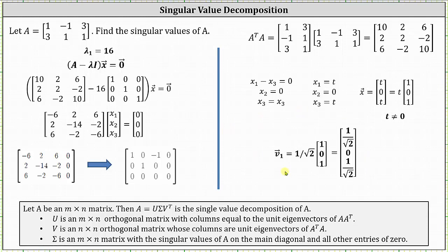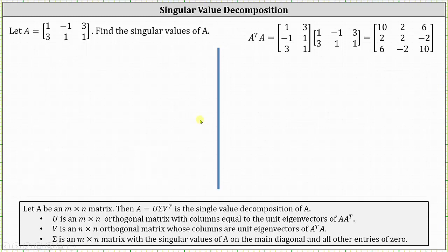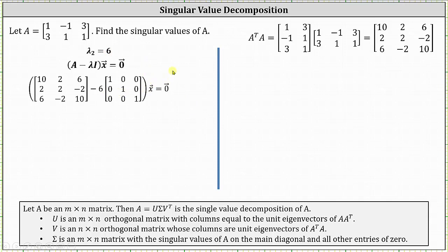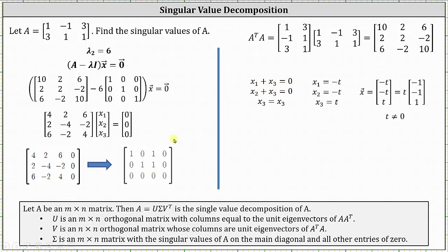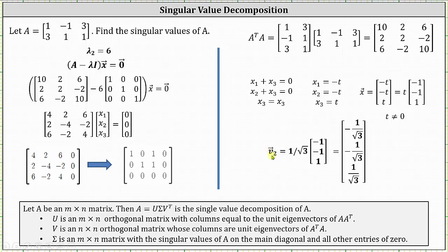For lambda sub two equals six, we solve the corresponding vector equation and reduce the augmented matrix. Row one gives x₁ plus x₃ equals zero, and row two gives x₂ plus x₃ equals zero; x₃ is again free. Letting x₃ = t, the eigenvectors are t times (−1, −1, 1). Normalizing — the magnitude is the square root of three — gives v₂ = (−1/√3, −1/√3, 1/√3), the second column of matrix V.